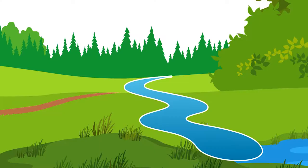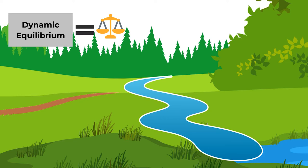Healthy rivers experience a phenomenon called dynamic equilibrium, which is a term for how rivers balance two important processes called flow and sedimentation.